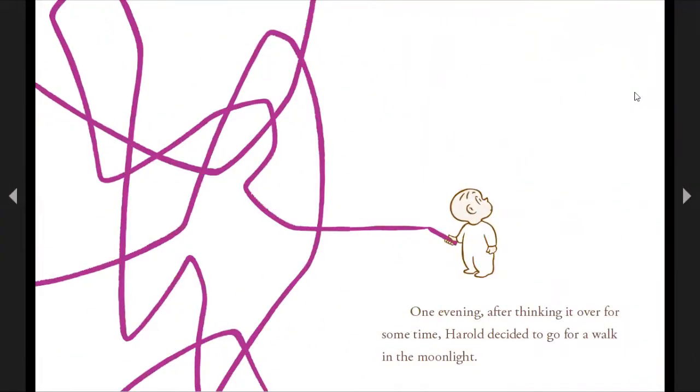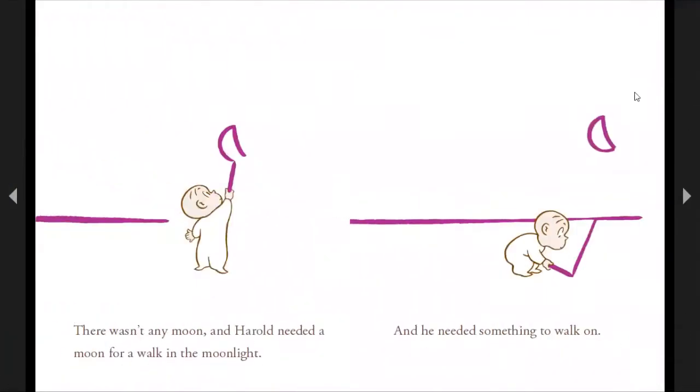One evening, after thinking it over for some time, Harold decided to go for a walk in the moonlight. There wasn't any moon and Harold needed a moon for a walk in the moonlight. And he needed something to walk on.